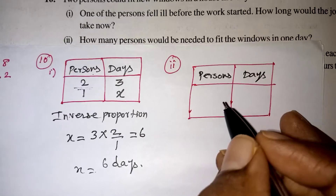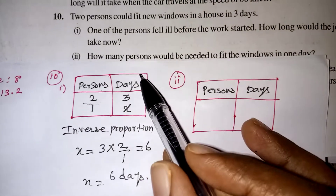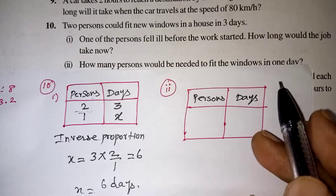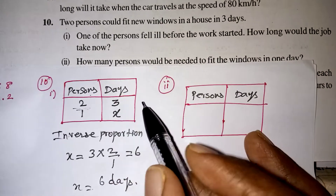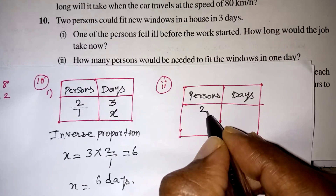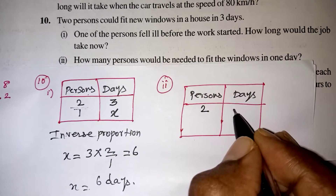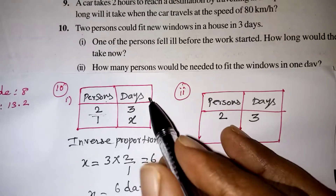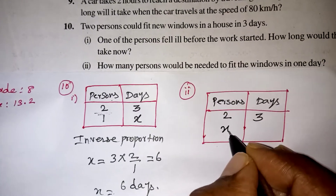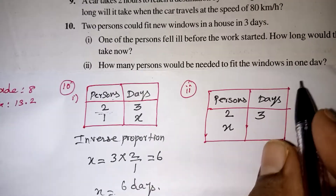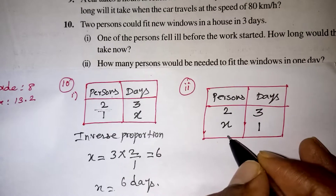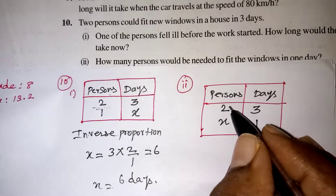We will move on to the second part of the question now. How many persons would be needed to fit the windows in one day, they are asking. In the beginning the question gives us: if two persons are working together, they will complete the work in 3 days. Now for the second part, how many persons — that is your x — will be needed to fit the windows in one day?